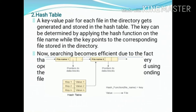The next data structure is the hash table. In the hash table, a key-value pair for each file in the directory gets generated and stored in the hash table. The key can be determined by applying a hash function on the file name, while the key points to the corresponding file in the directory.